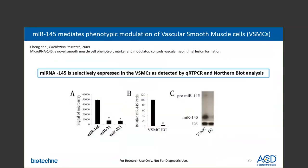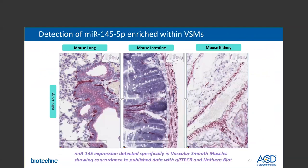Here is a publication showing the detection of microRNA-145 being selectively expressed in vascular smooth muscle cells using standard assays like qRT-PCR and northern blot analysis. Our internal data using the new assay validated published data. As you can see, microRNA-145 is detected specifically in the vascular smooth muscle cells in mouse lung, intestine, and kidney samples.